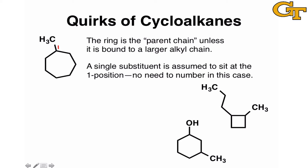For a ring that has only one substituent, we start with one, and we can number in either direction. A single substituent on a ring is always given the one position, and in fact it's assumed to sit there, so we don't necessarily have to say 'one-methyl cycloheptane.' We can just say 'methyl cycloheptane,' and that specifies this compound completely.